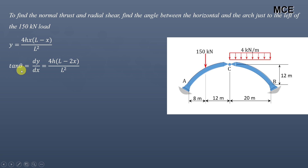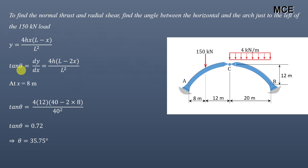So tan θ = 4h(l − 2x) / l². To find the slope at x = 8 m, which is the point just to the left of the 150 kN load, substitute x = 8 into the formula: tan θ = (4 × 12 × (40 − 2 × 8)) / 40² = (48 × 24) / 1600.